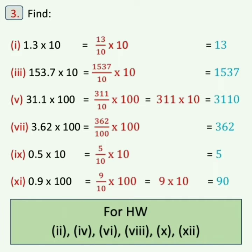Now the eleventh one: 0.9 into 100 is equal to 9 upon 10 into 100. Cancel 00 to get 9 into 10, which is equal to 90. Is it clear, everyone? Very good.